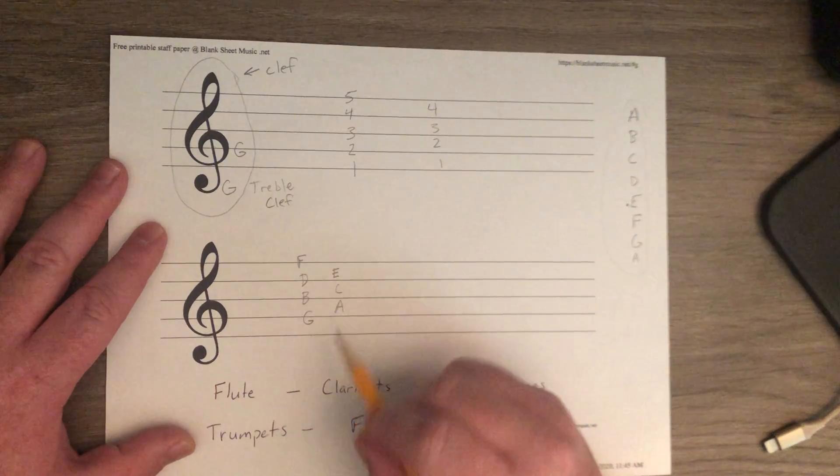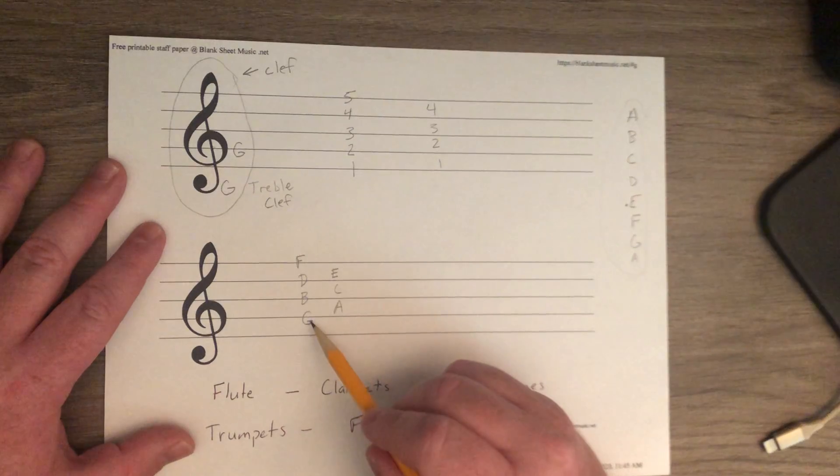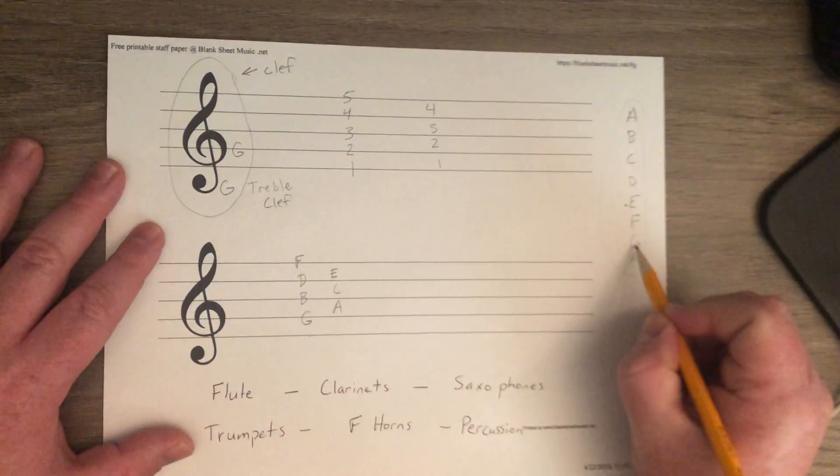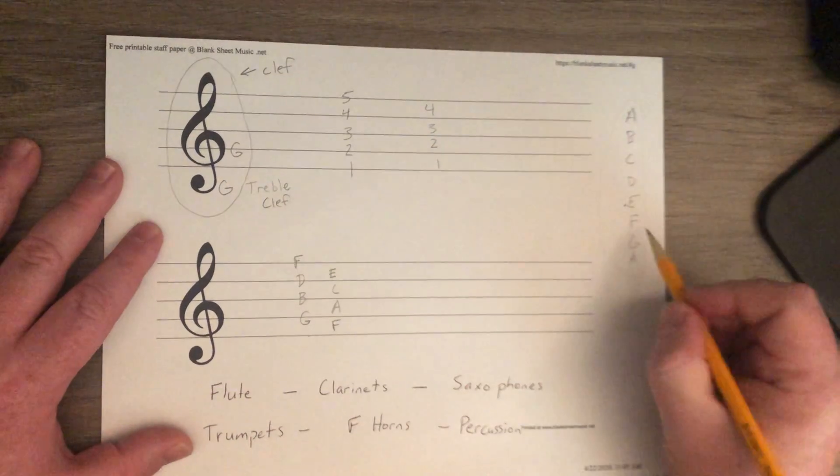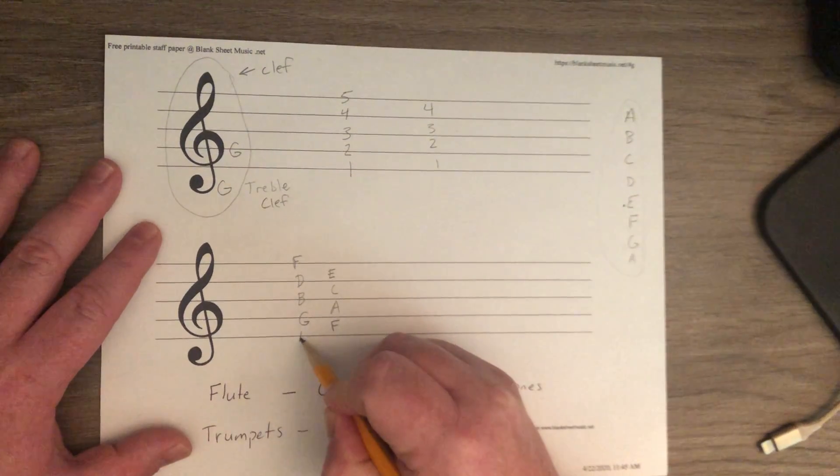All right? So, let's go backwards now. We know that we have F, E, D, C, B, A, G. That means that the space right below G, go backwards in your alphabet, is F. And the space below F, if we go backwards in our alphabet, is E.